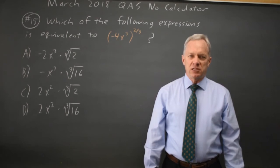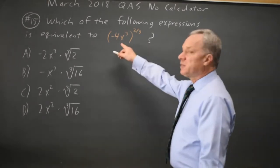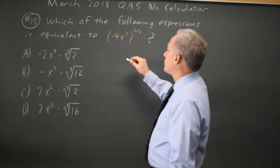This is question 15. College Board is asking us to rewrite an expression using rational exponents using a radical instead. And when I do these I like to separate the constant from the variable.